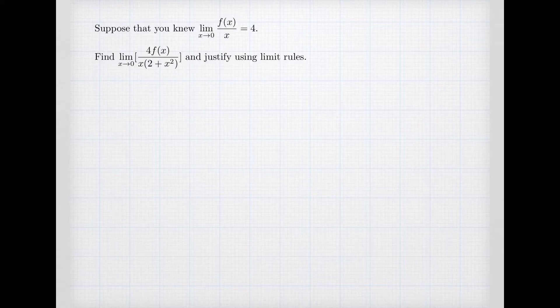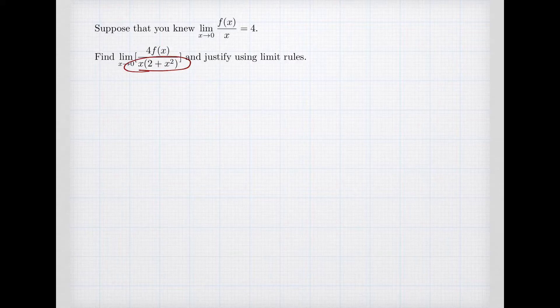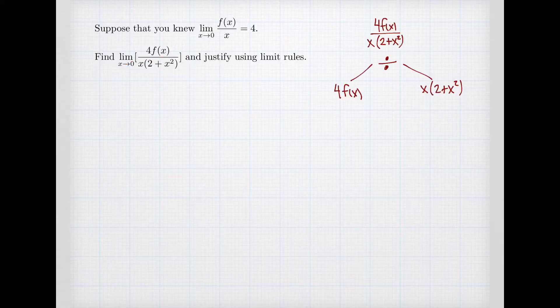We need to justify that using limit rules. The idea behind limit rules is to look at the formula we're working with and see how it is constructed out of more elementary parts. We might do that by thinking about a tree diagram that describes those operations. For example, looking at this expression, it's a quotient — I've got 4f(x) on top and x(2+x²) on the bottom.